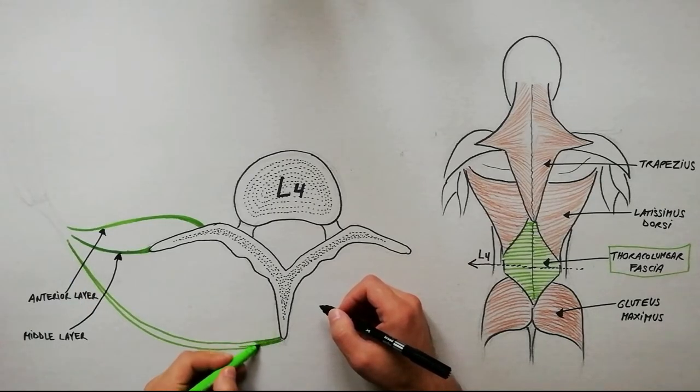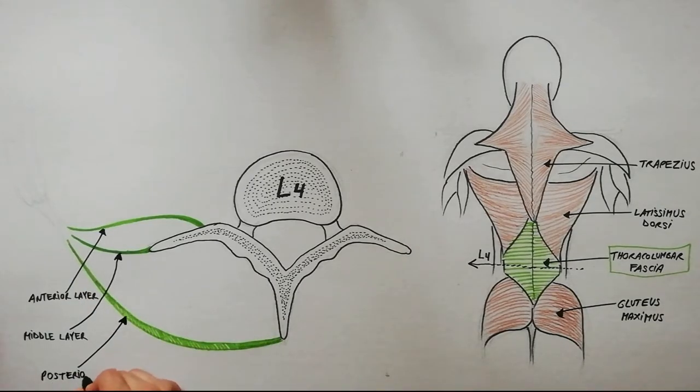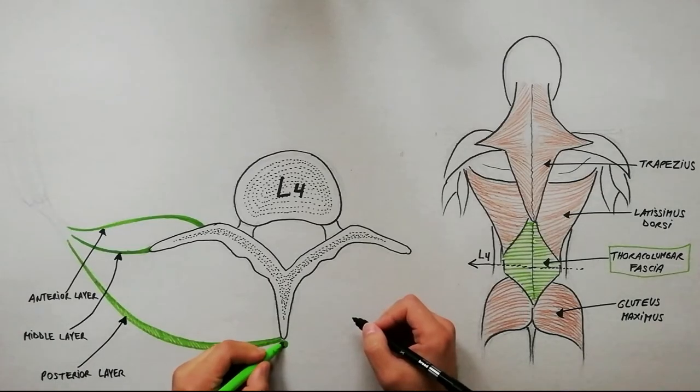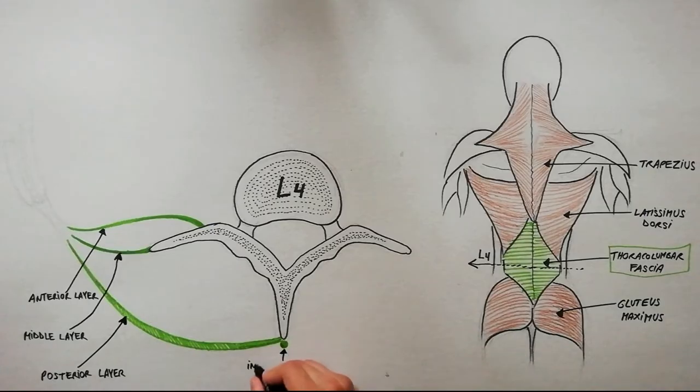three layers, inserts onto the tips of spinous processes. Hence it is indirectly continuous with the interspinous ligaments.